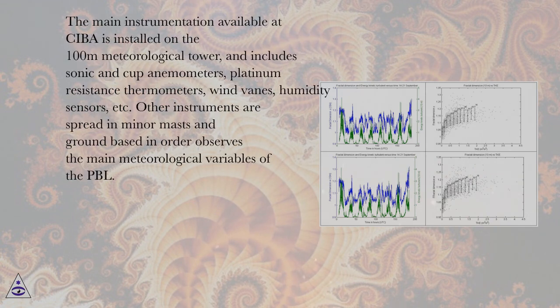The main instrumentation available at CIBA is installed on the 100-meter meteorological tower and includes sonic and cup anemometers, platinum resistance thermometers, wind vanes, humidity sensors, etc. Other instruments are spread in minor masts and ground-based in order to observe the main meteorological variables of the PBL.